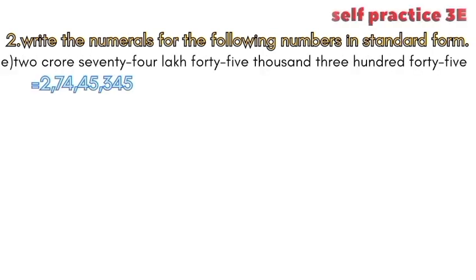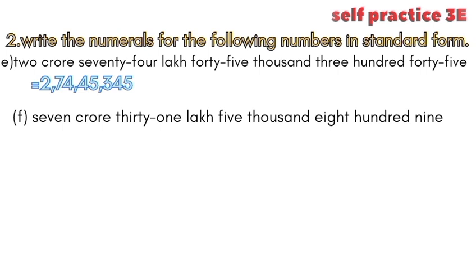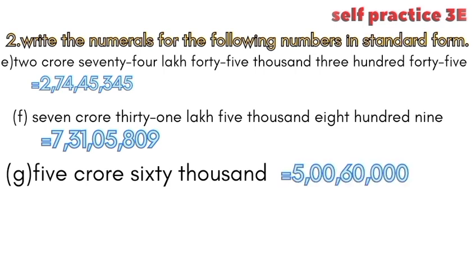E. two crore seventy-four lakh forty-five thousand three hundred forty-five: 2,74,45,345. F. seven crore thirty-one lakh five thousand eight hundred nine: 7,31,05,809.